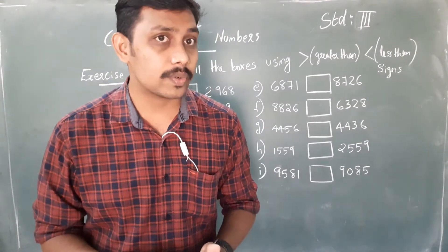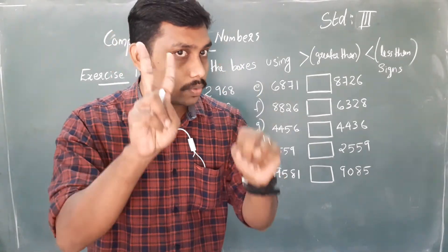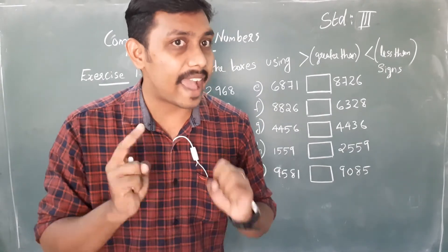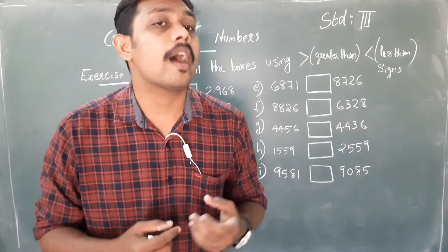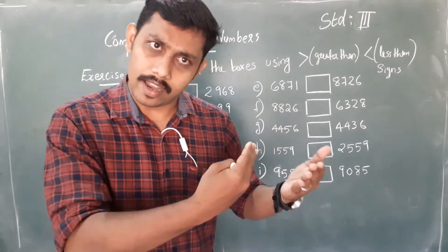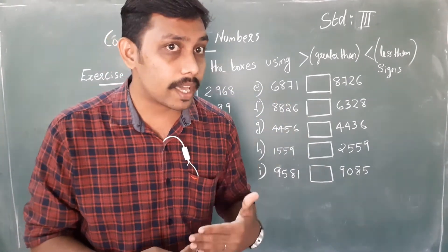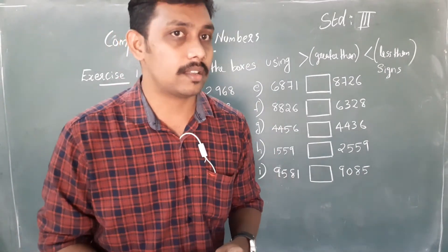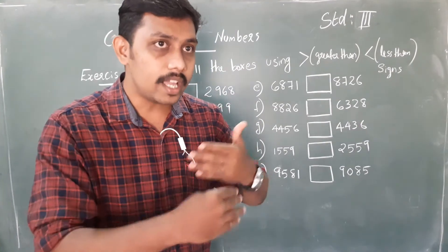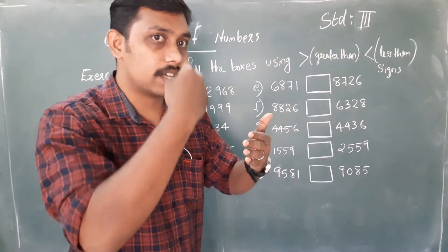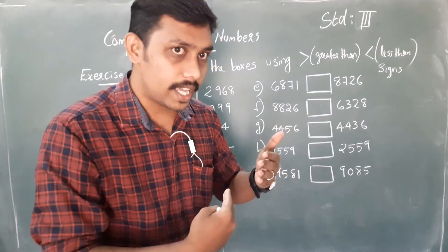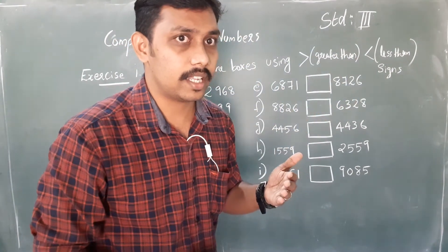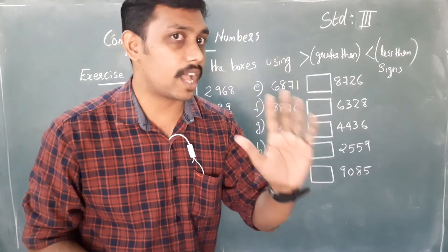What is the second rule? If two numbers have the same number of digits, we compare the left extreme digits. Whichever left extreme digit is larger, that number is larger. We apply the rule for each place: first the thousands place, then hundreds, then tens, and finally the ones place. There are five rules total.